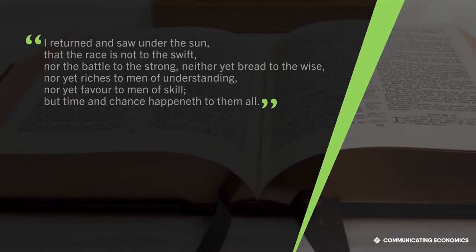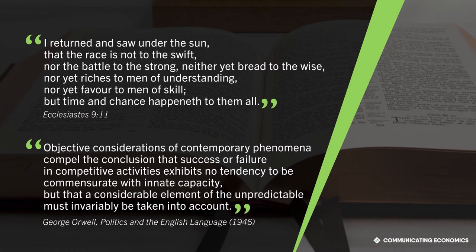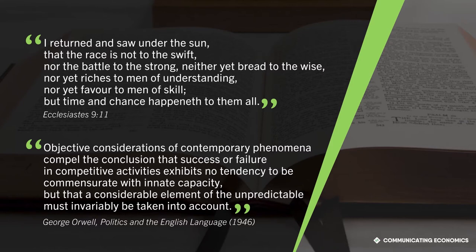This is a section from a very popular book — otherwise known as the Bible. 'I returned and saw under the sun, that the race is not to the swift, nor the battle to the strong, neither yet bread to the wise, nor yet riches to men of understanding, nor yet favour to men of skill, but time and chance happeneth to them all.' This is it in modern English: 'Objective considerations of contemporary phenomena compel the conclusion that success or failure in competitive activities exhibits no tendency to be commensurate with innate capacity, but that a considerable element of the unpredictable must invariably be taken into account.' When you read economics articles or hear economists speak, which one of these two examples do you come across more often? The second one.